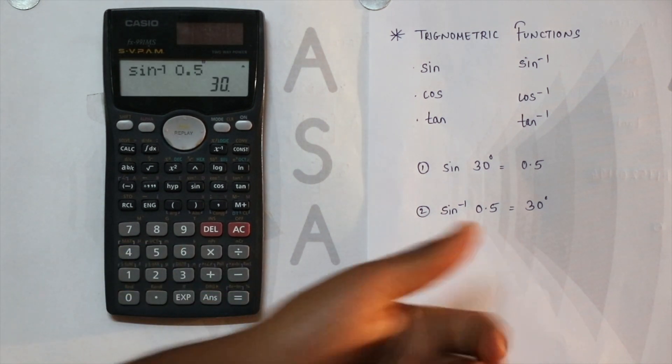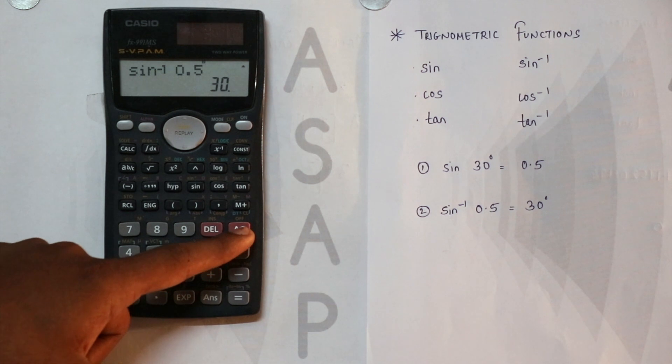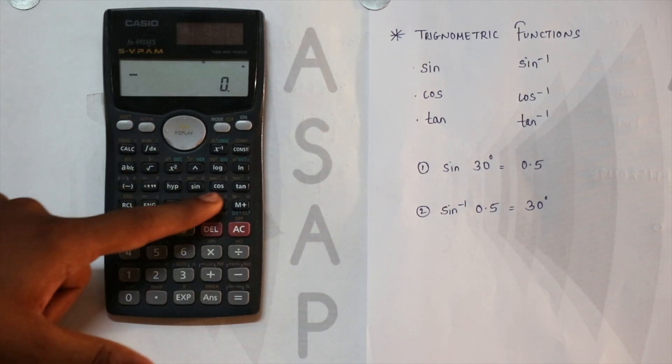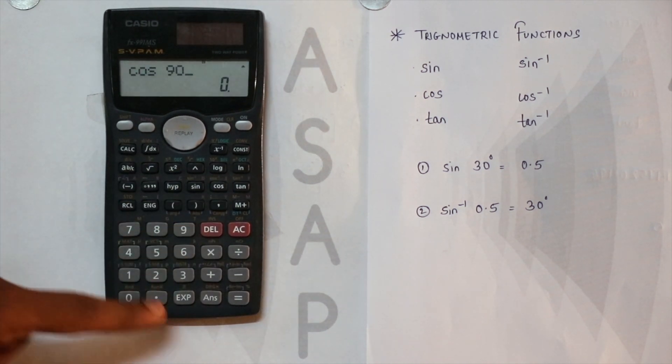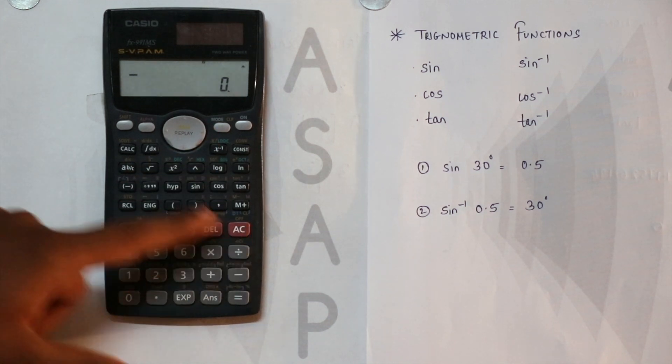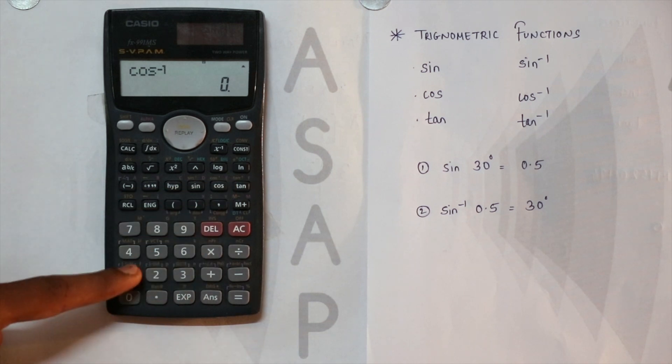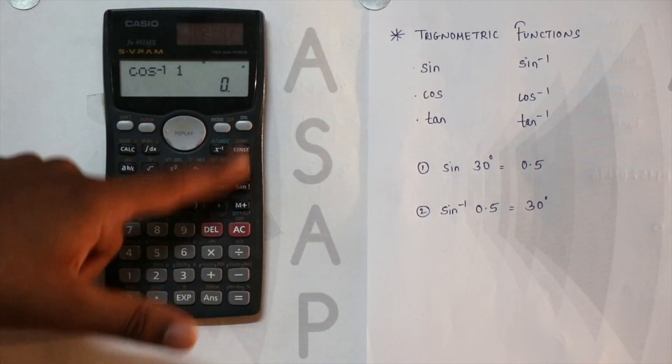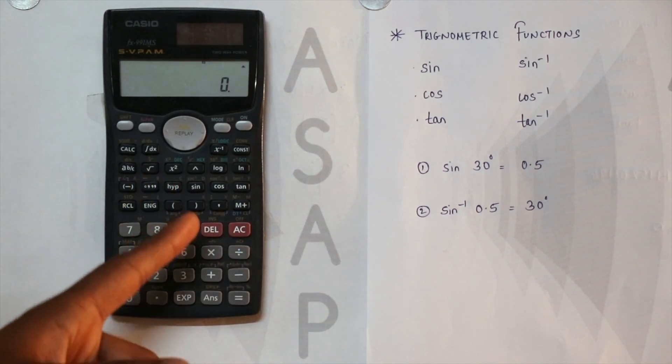Similarly, we can do for cos. I'll just show you one: cos 90 is 0 as you all know. And shift, so cos inverse of 1 will get 0. So it is as simple as that. You only use sine, cos, and tan buttons.